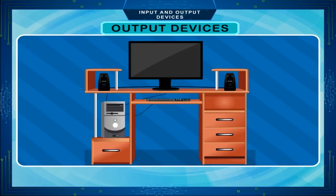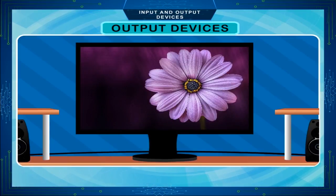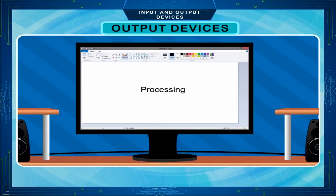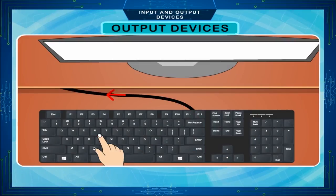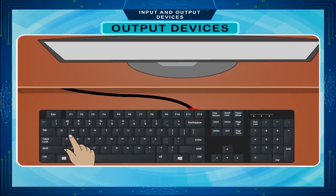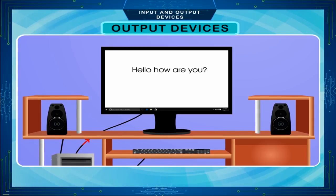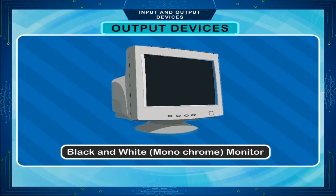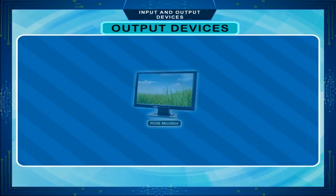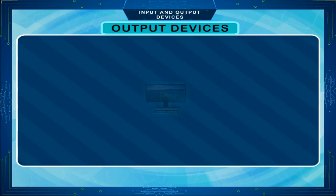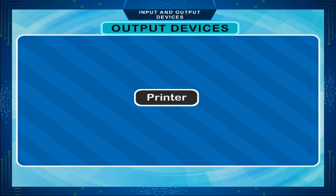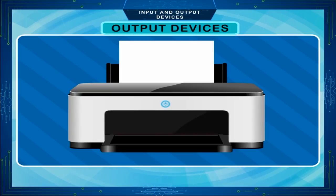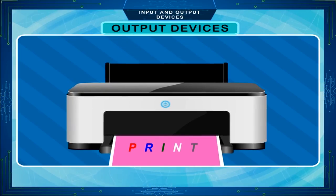Monitor. The screen of a computer is called a Monitor or VDU. It looks just like a television screen. It is used to display the result after processing. Whatever you type on the keyboard is displayed on the monitor. There are three types of monitors: Black and White Monochrome Monitor, RGB Monitor, and Colored Monitor.